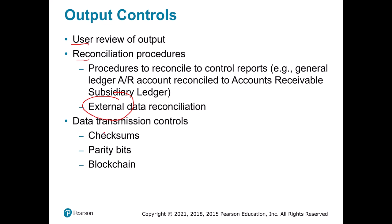We use a variety of controls when transmitting data, such as checksum or parity — though that's more of a networking topic, so don't worry too much about it. Blockchain is another example of verifying that data isn't changed in transit, though it's largely overhyped, so we won't talk about it a lot.